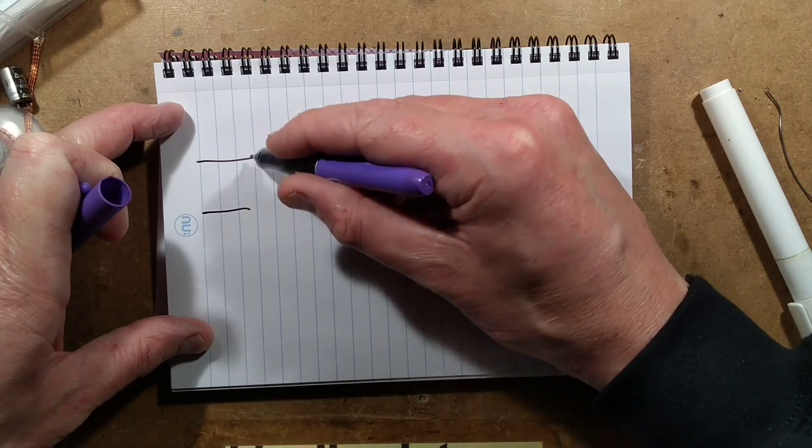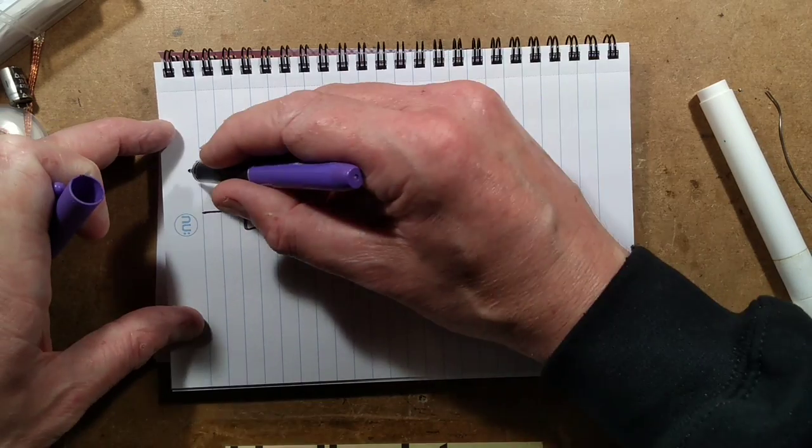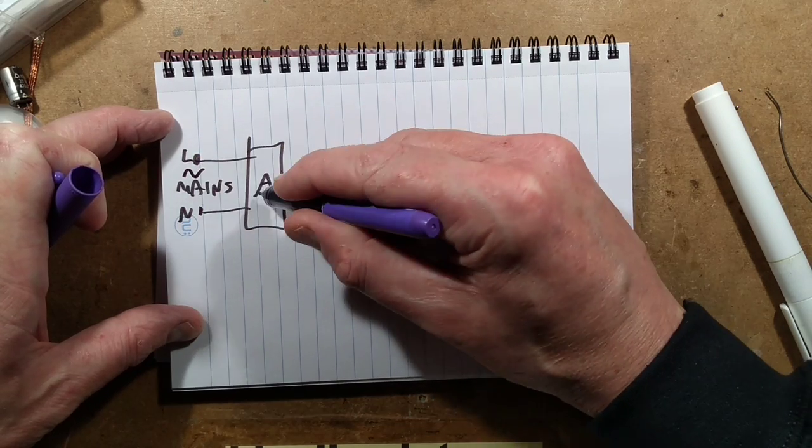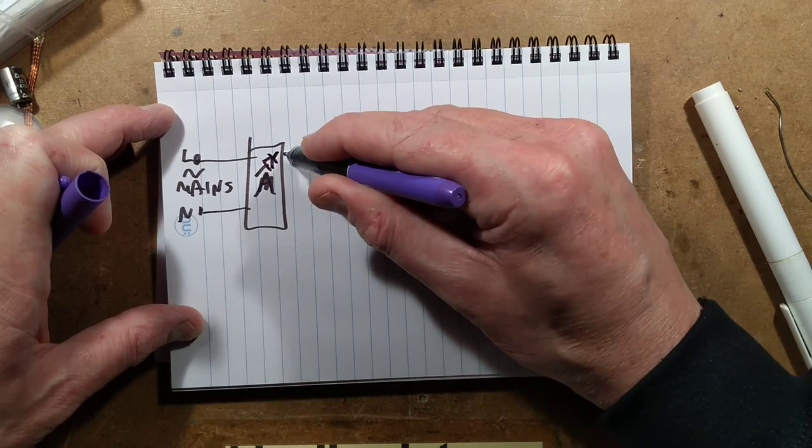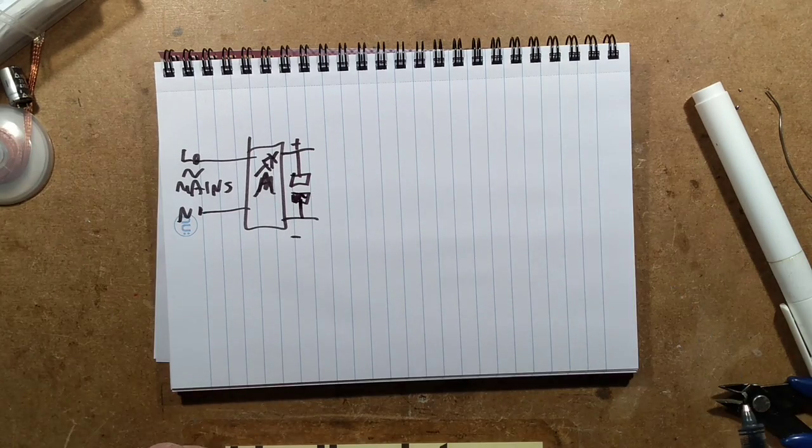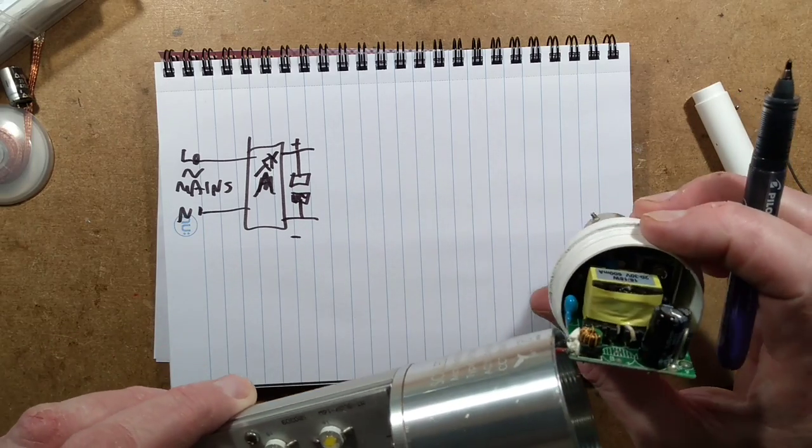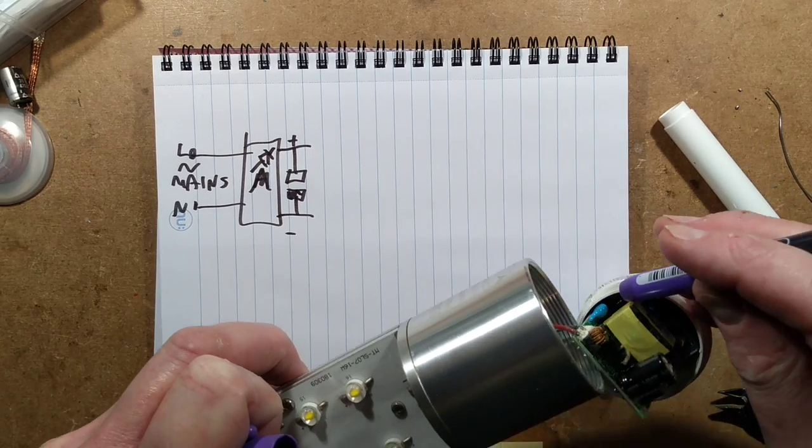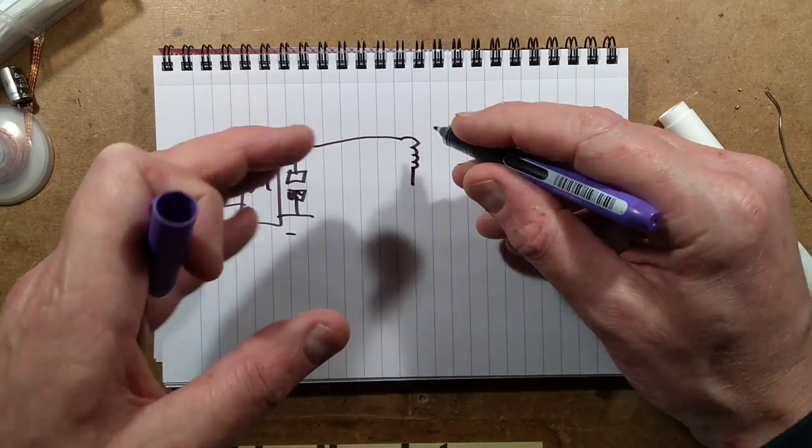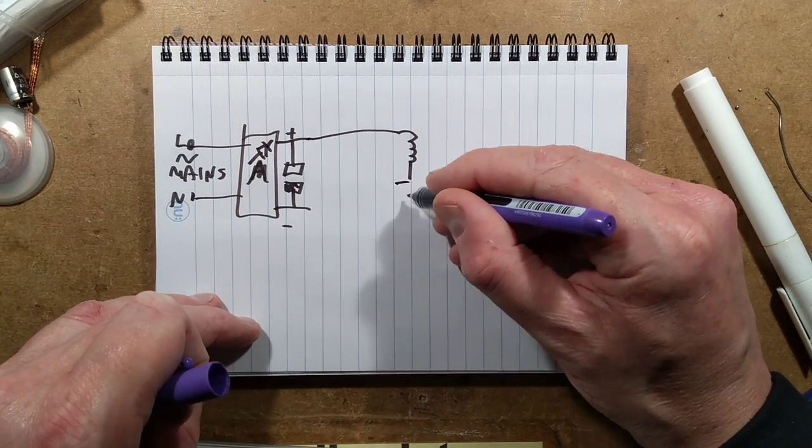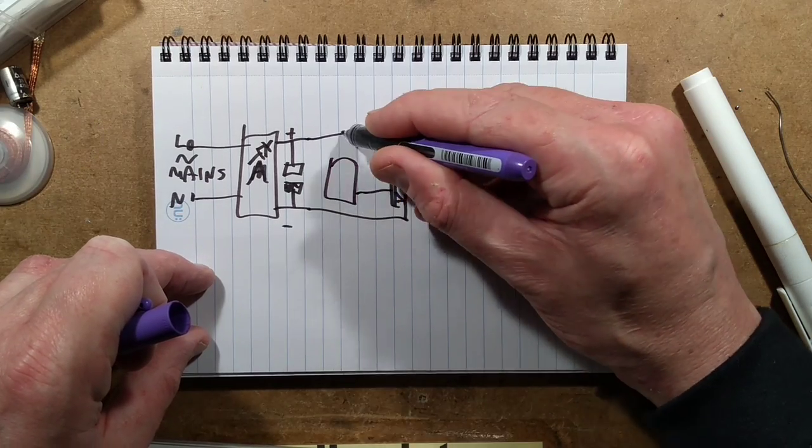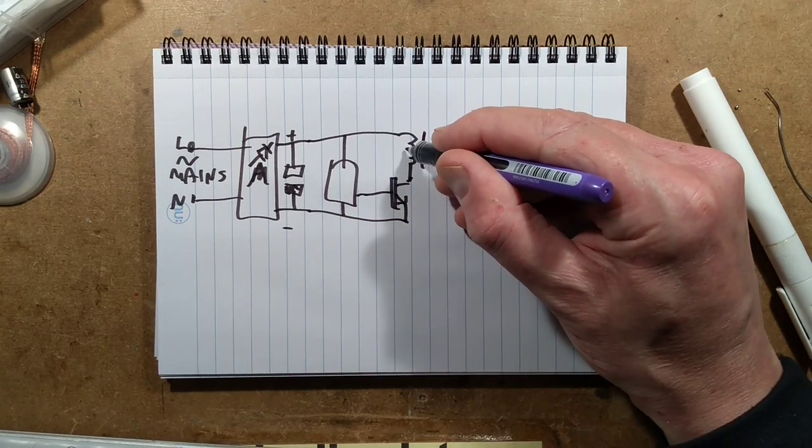With a typical switch mode power supply, you have the mains. It's AC live neutral. And it goes through a bridge rectifier, which comes out plus and minus. There's a big smoother capacitor across that. And then the coil in the transformer goes to positive. And then there's a transistor that switches it down to negative. There's a control circuit that then pulses that at very high frequency.